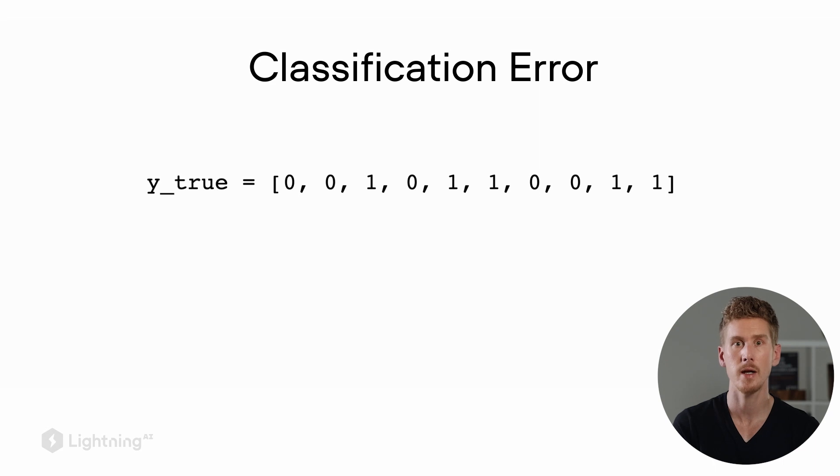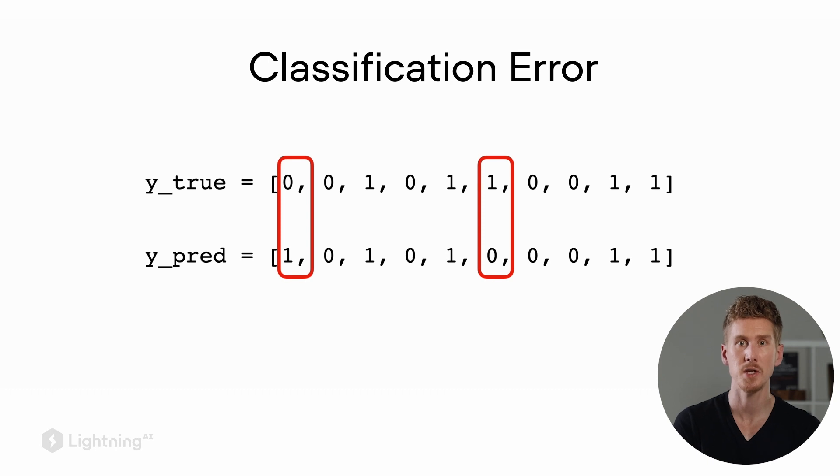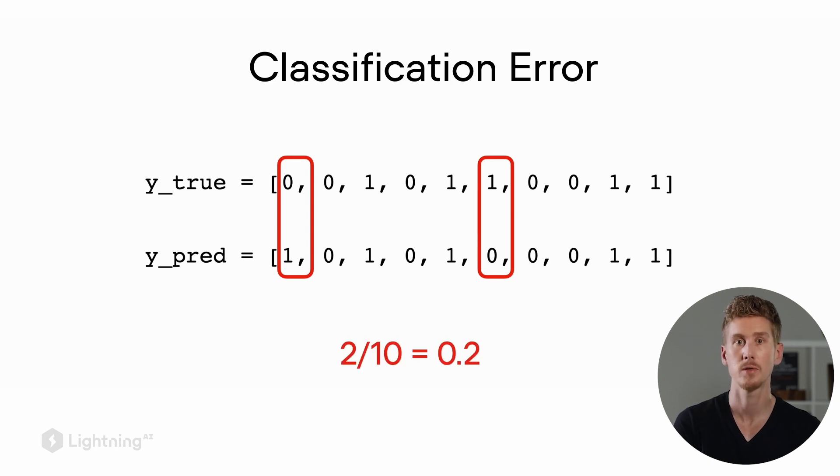One of the common metrics to measure the performance of a classifier is the classification error. So here consider an array of the true class labels that we want to predict. And now consider below the prediction by our model. So in this case, the model misclassified two examples. So here the classification error is 0.2, 2 out of 10.